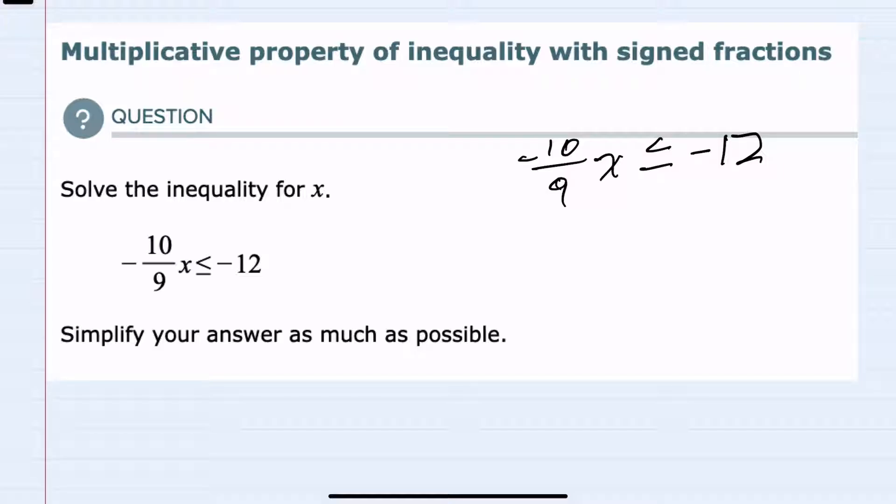So here to solve for x, I would like to get rid of this negative 10 ninths that's being multiplied by x, and I can do so by multiplying by the reciprocal, negative nine tenths. If I multiply on the left, I must also multiply on the right by the same value.